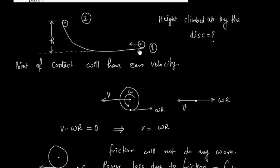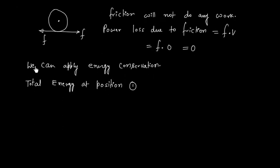This line is reference line. This means we can ignore potential energy at position one. So potential energy is zero.